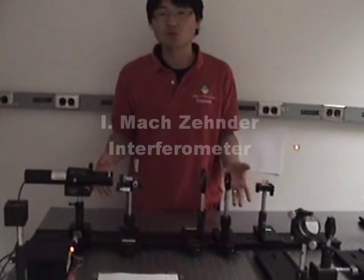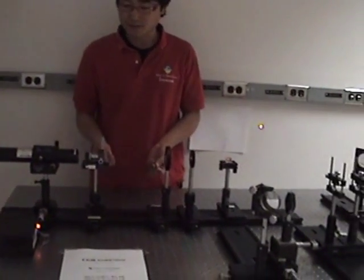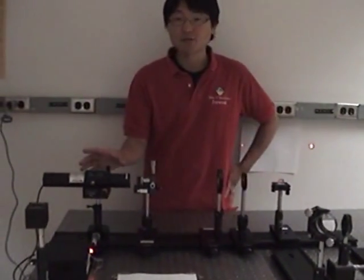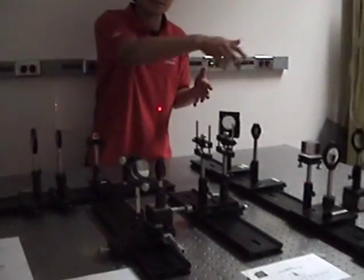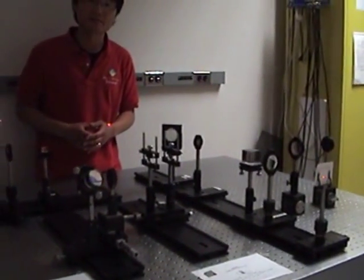This is the setup to explain how the CGH works. Basically there is a laser source, this is a simple HeNe laser and the other setup here is the well-known Mach-Zehnder interferometer.